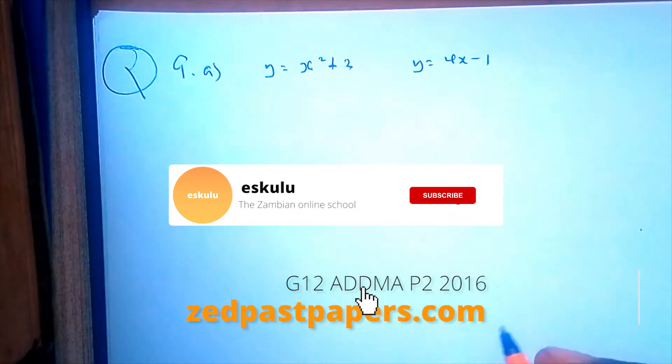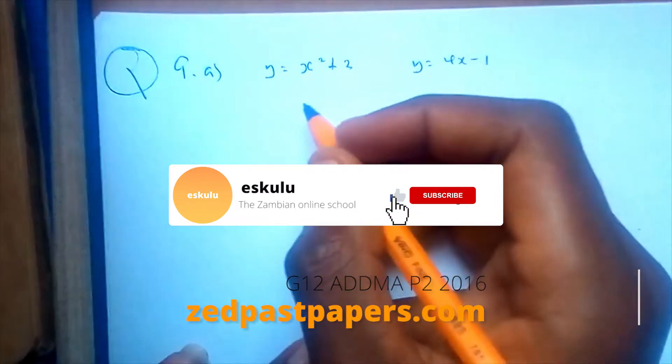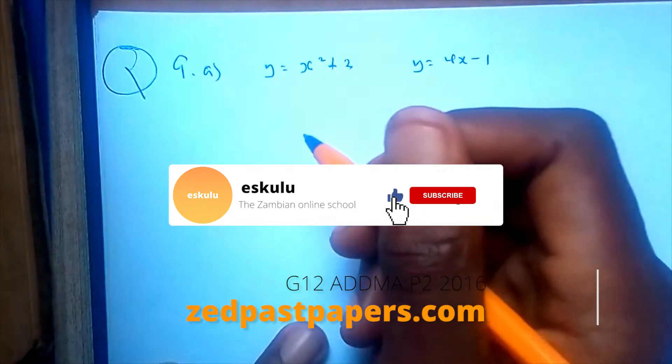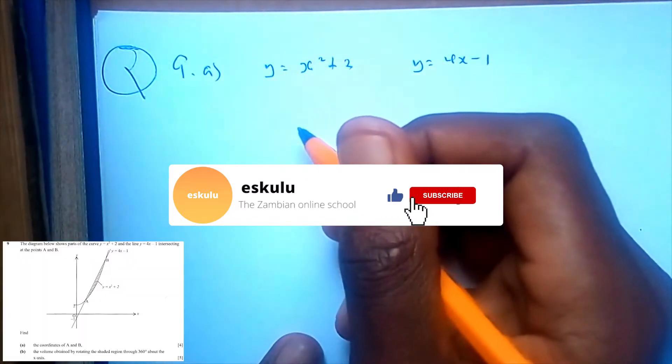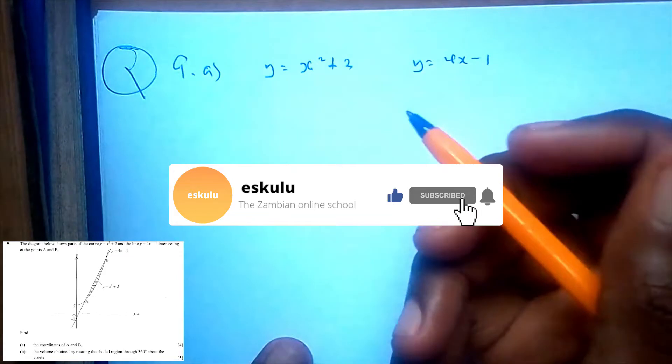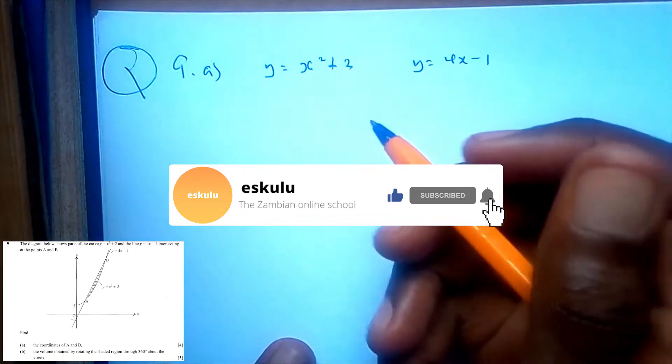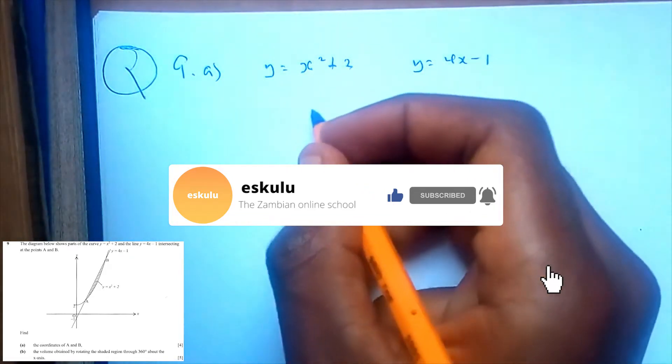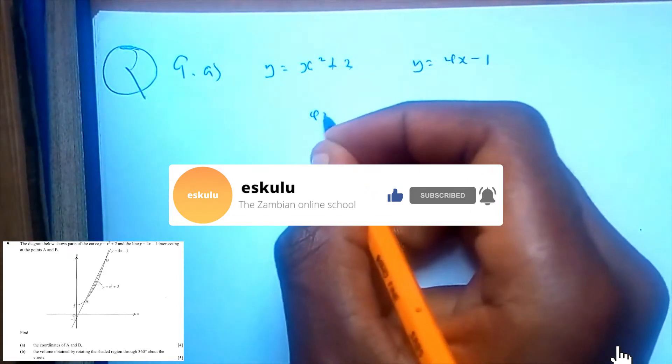Find the coordinates of A and B. Since they are intersecting, it means they are equal to one another. So, 4x plus 1...